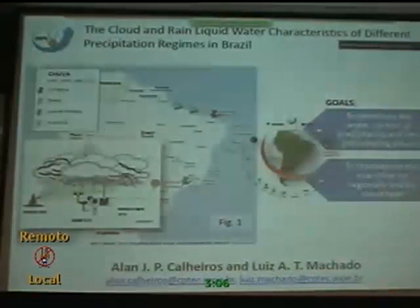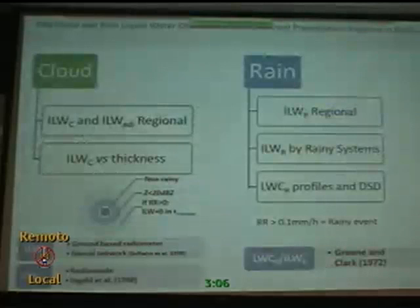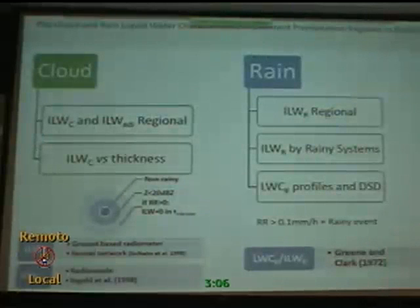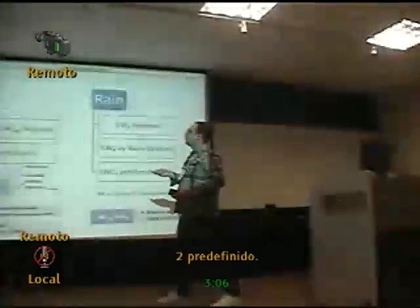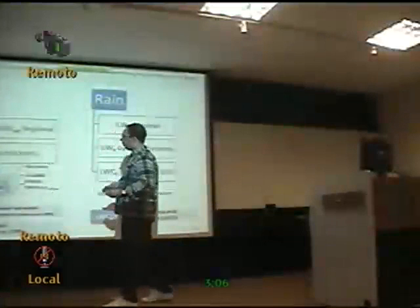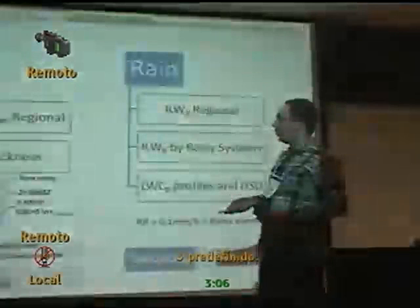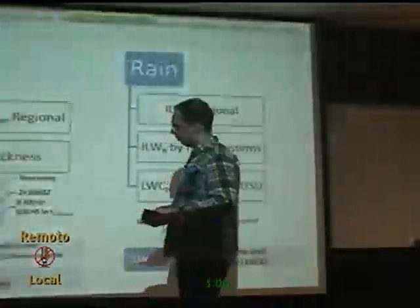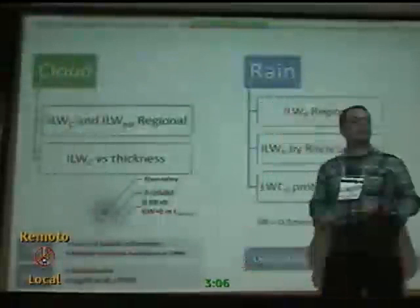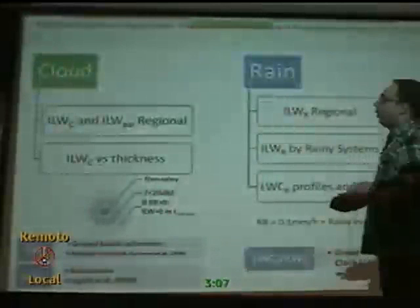I have to divide my presentation into parts because when I look into the cloud, I'm not partitioning the liquid water — I just see the liquid water for clouds without precipitation and clouds with precipitation. To determine the liquid water for non-precipitating clouds, we're using the cloud-based radiometer and the liquid water content in the adiabatic process for the radiosonde. We have used a neural network for each site. For defining what is rain and what is no rain, I am using a filter.